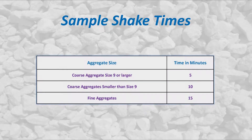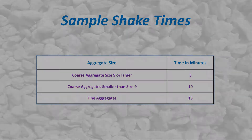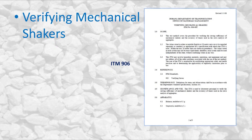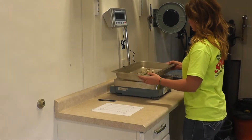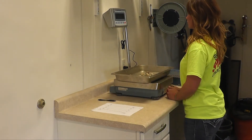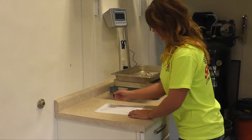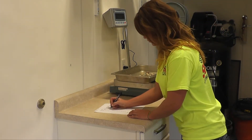The shaking time is also determined by the size of aggregate in the sample, and the minimum mechanical shaking times are included in the following table. The actual shaking time is determined in accordance with ITM 906. Once the material has shaken for the appropriate amount of time, the material on each sieve and the pan is weighed and recorded.